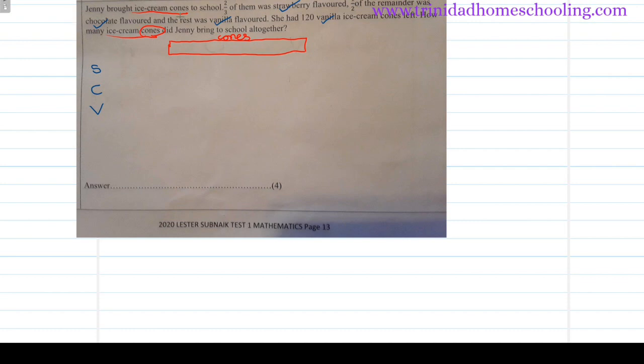Now let's put in the numbers. For strawberry, two-thirds of them—them meaning the whole amount of cones—was strawberry. So this 3 here at the bottom will tell us how many parts it is split into. Two-thirds, each part here is a third, so two-thirds, two parts out of this three, is strawberry. Two-thirds of the cones were strawberry.